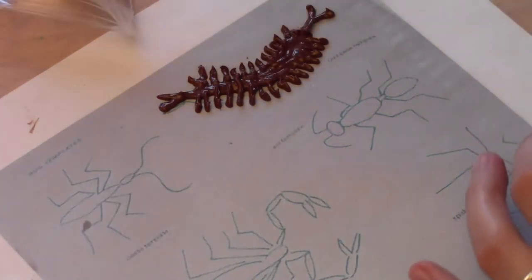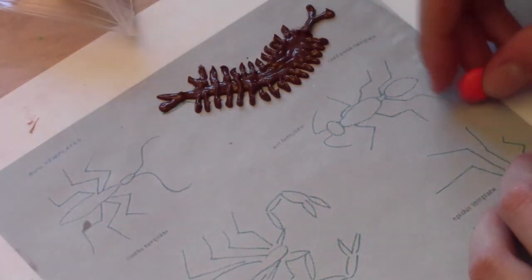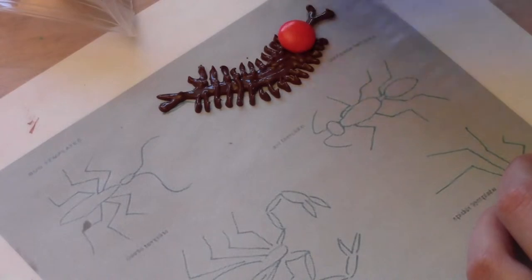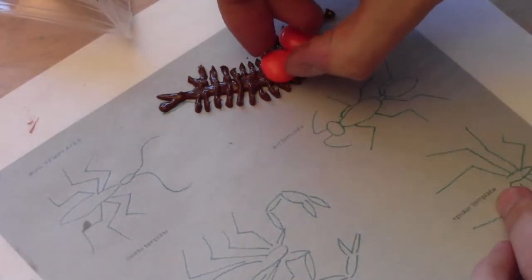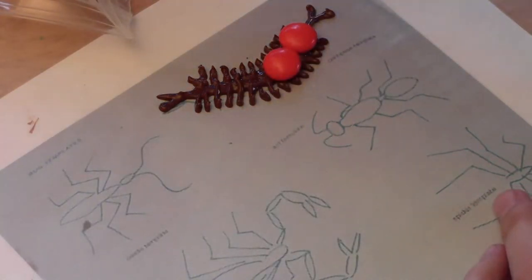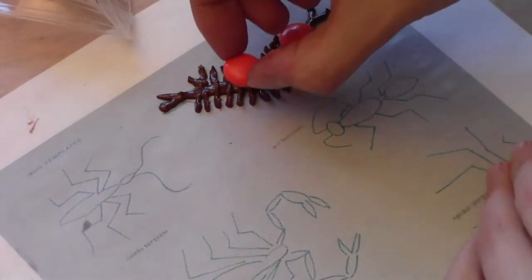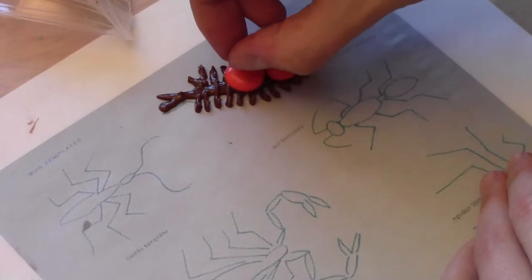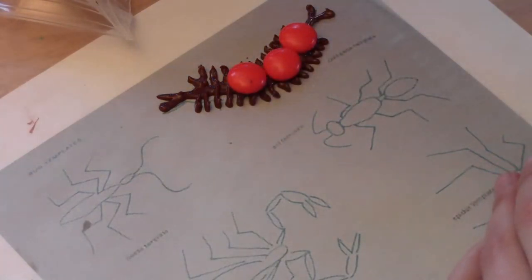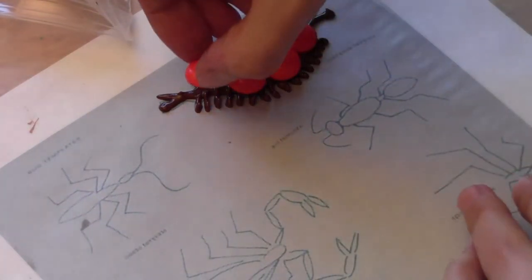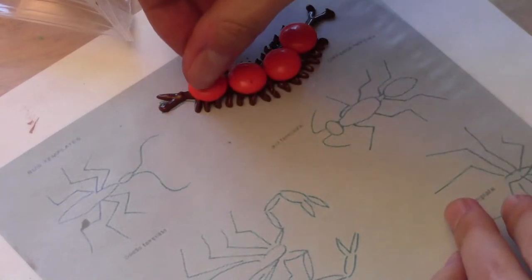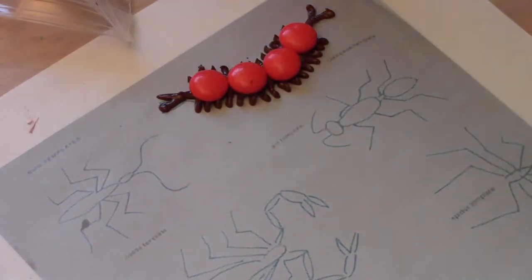And then we get some M&Ms and for this I'm going to use some orange ones. We're going to just plop them down on his body with the M part of the M&M down so you can't see it. And there's the centipede.